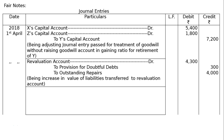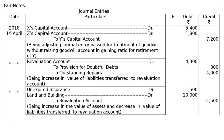Then the revaluation credit side entry: unexpired insurance account debited 1,500; land and building account debited 10,000; to revaluation account 11,500. Narration: being increase in value of assets transferred to revaluation account.